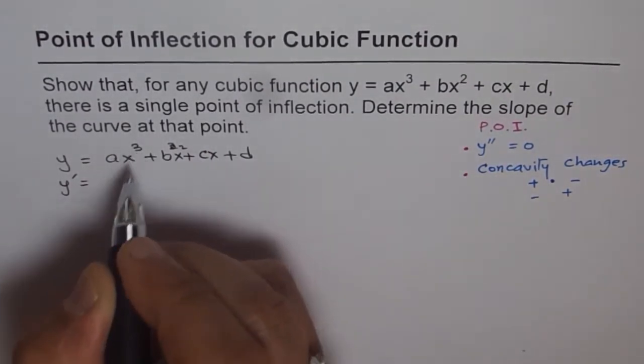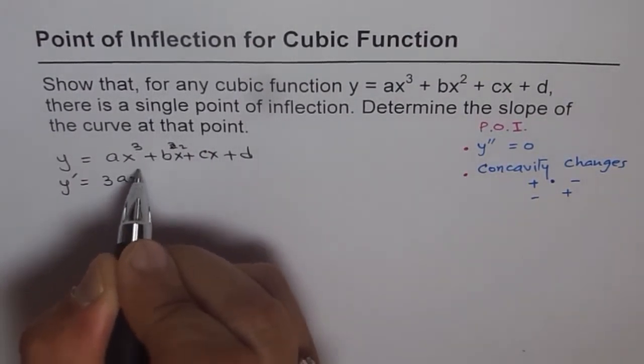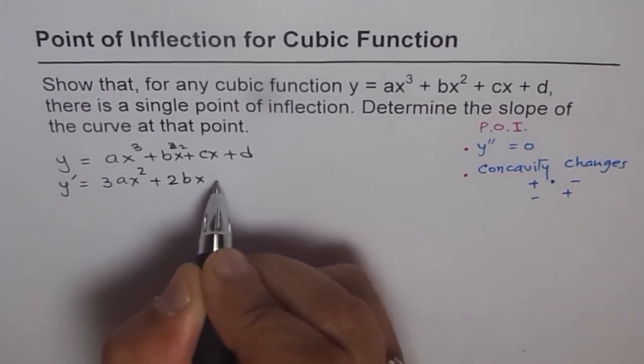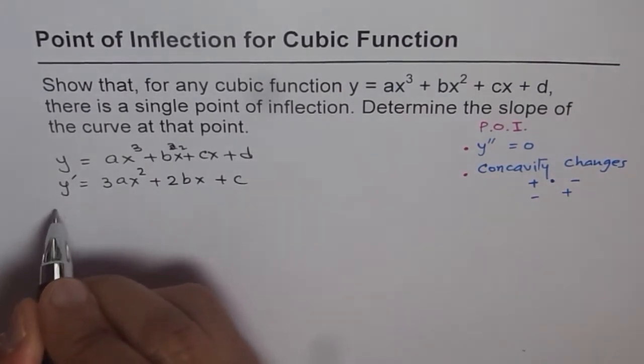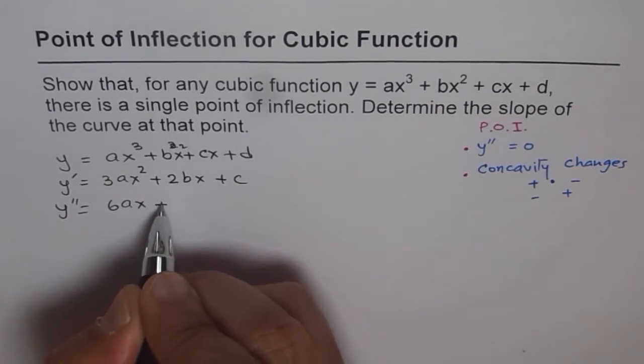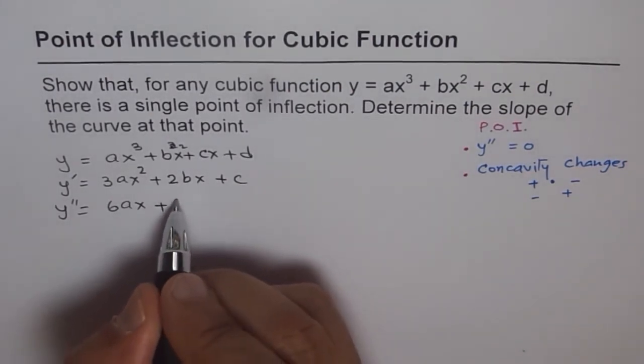We have y equals ax³ plus bx² plus cx plus d. So what is y dash? 3ax² plus 2bx plus c, that is y dash.